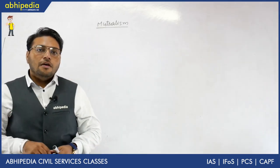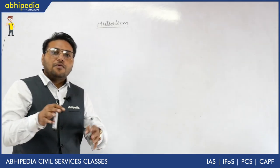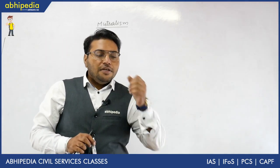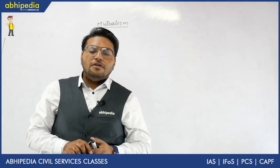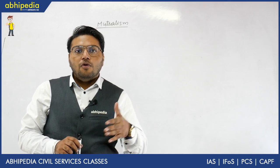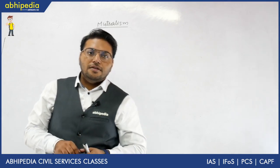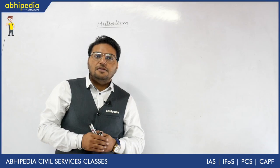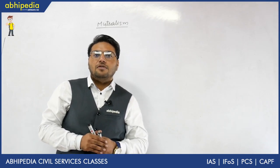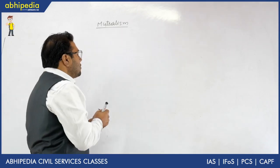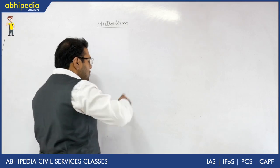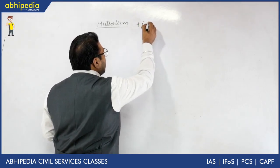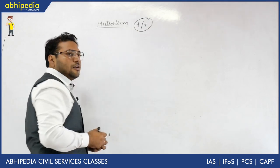First of all, what is mutualism? Mutualism is an interaction between two species. We study this topic under community ecology. A community is when more than one species interacts with one another. So mutualism involves more than one species, and in this relation both species get benefit. That is mutualism.